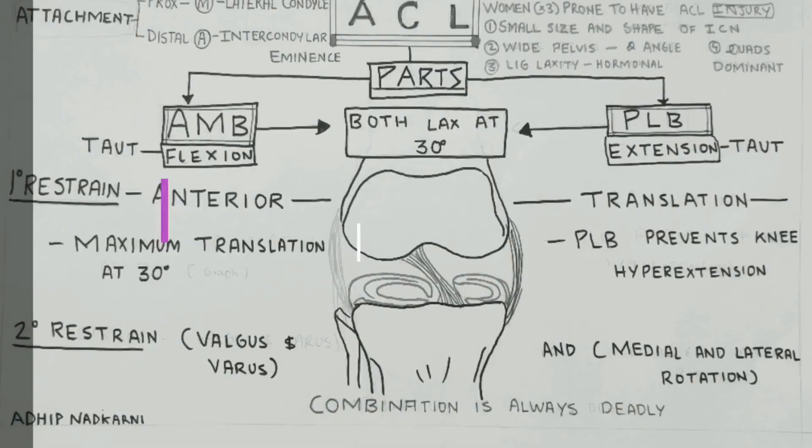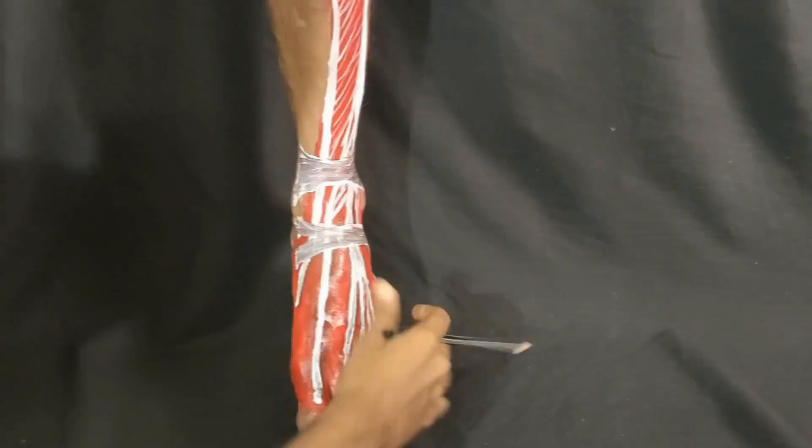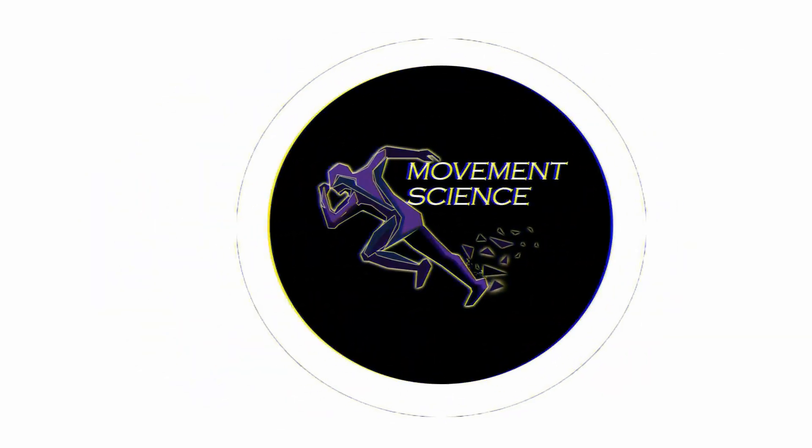Hello everyone, this is Adip, welcome to my channel Movement Science where I simplify biomechanics. In today's video we are going to talk about the function of the elbow joint. We will be covering the motion at the elbow joint — the angles and the axis — and also the different factors that influence motion at the elbow joint.